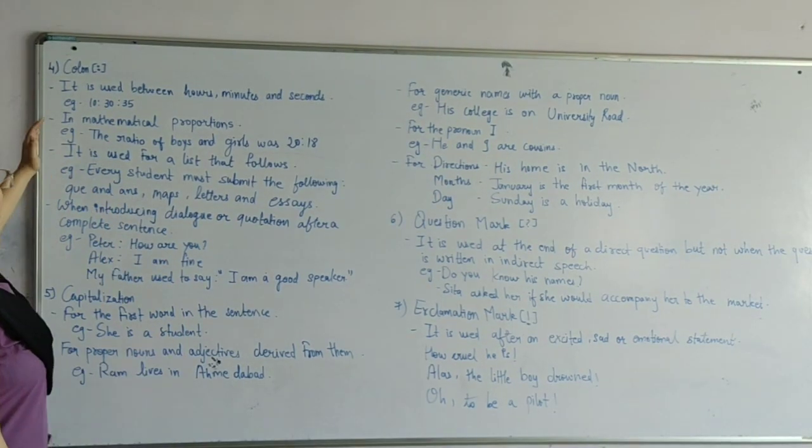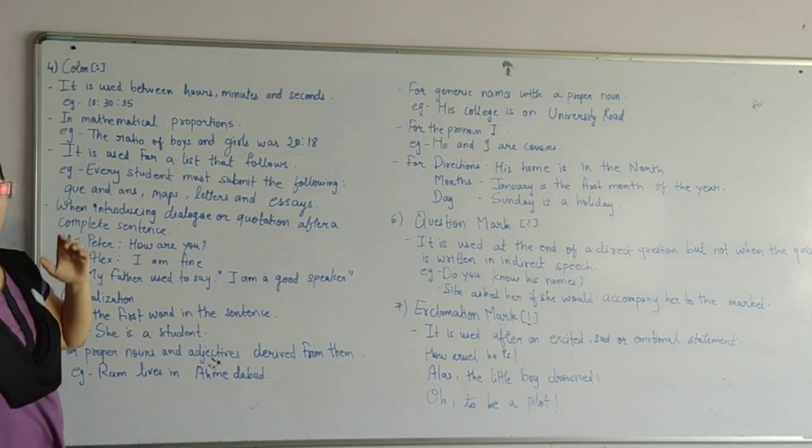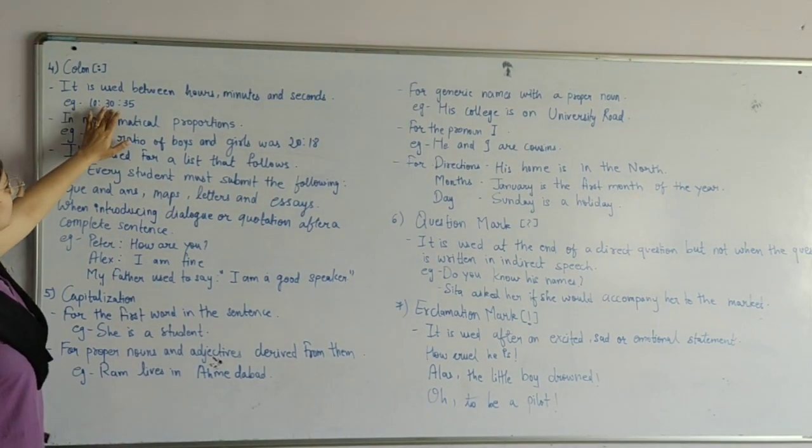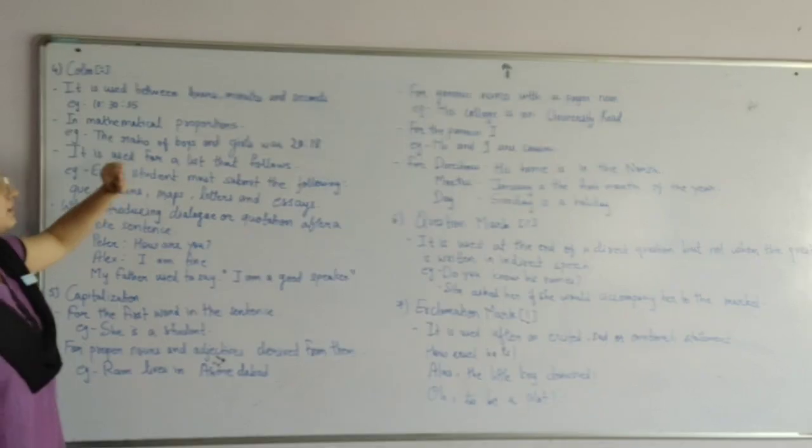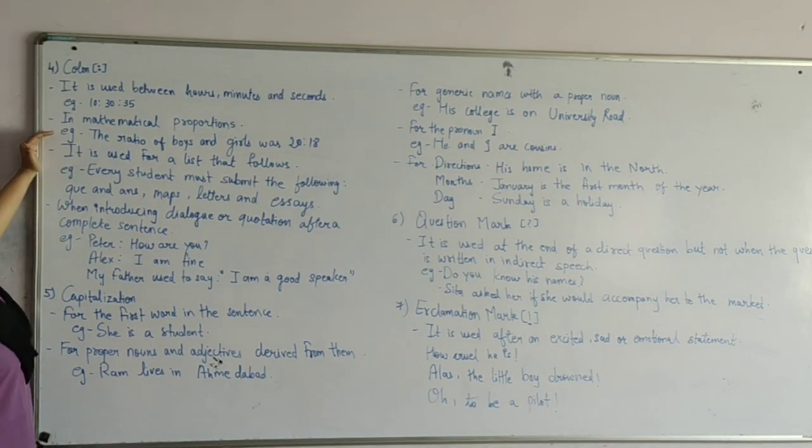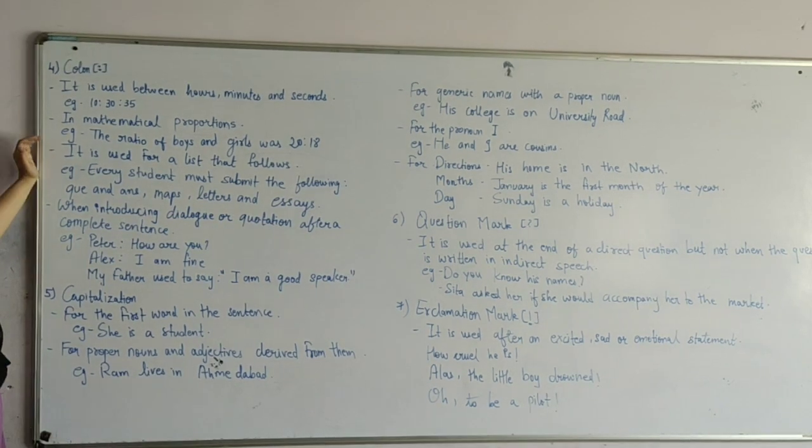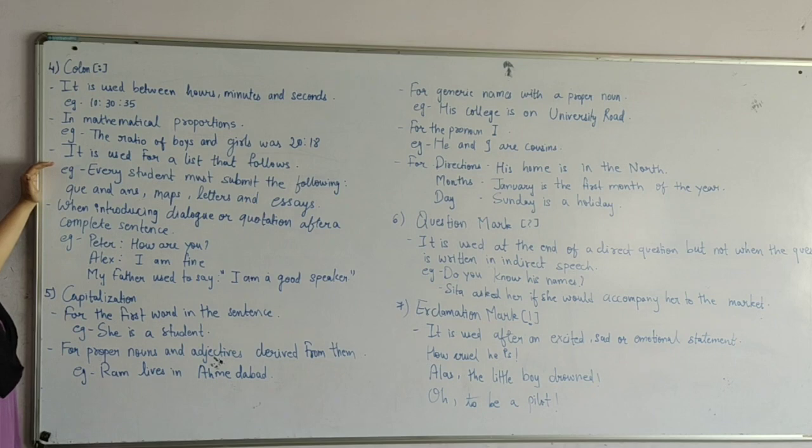Next, number four, colon. It is used between hours, minutes, and seconds. For example, 10:30:35. Next, in mathematical proportion. For example, the ratio of the boys and girls was 20:80. It is used for a list.